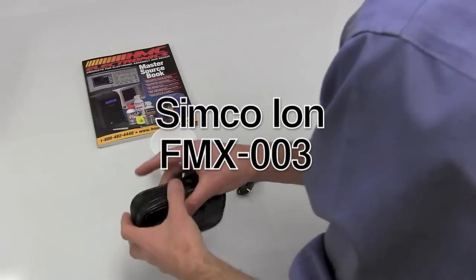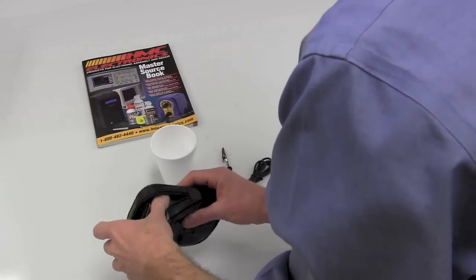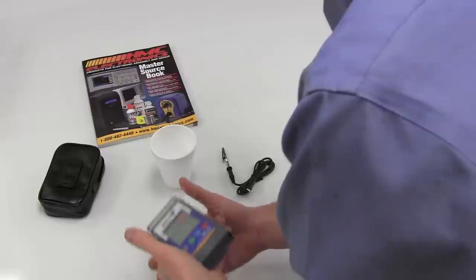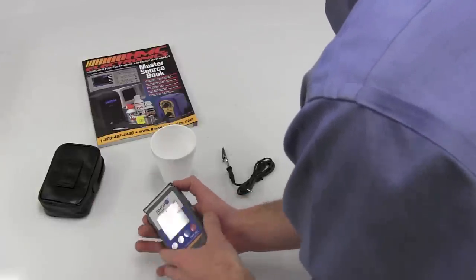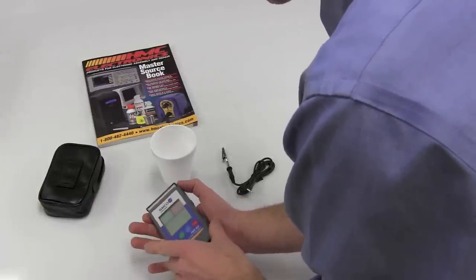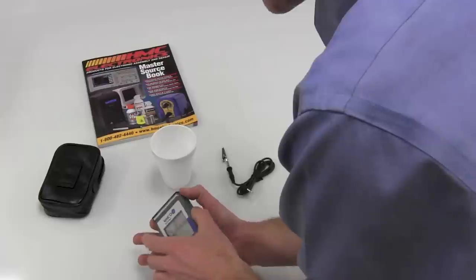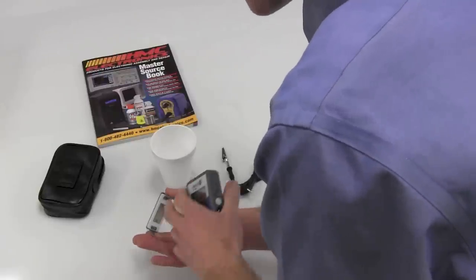The FMX003 comes in this little handy carrying case. Battery is included. The unit itself is a very simple point-and-shoot, very accurate field meter. It's going to be able to take a measuring on a static charge on an area.